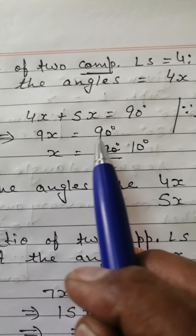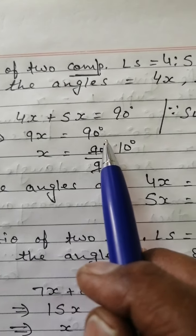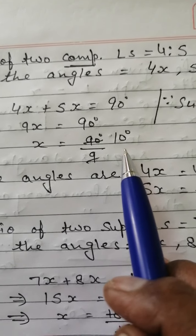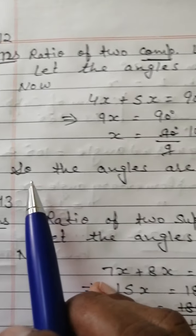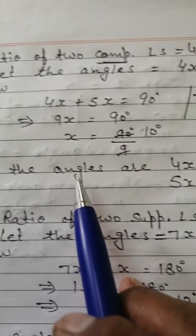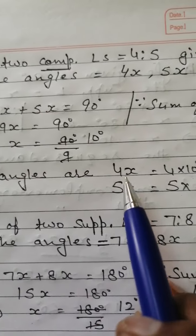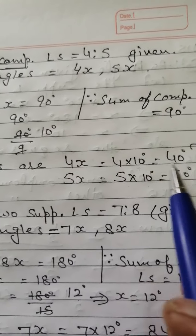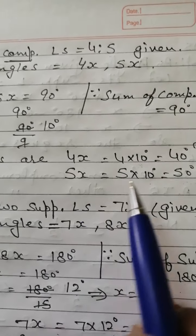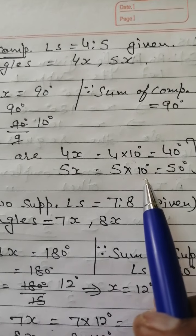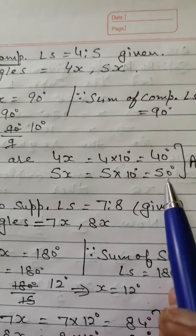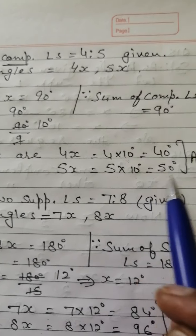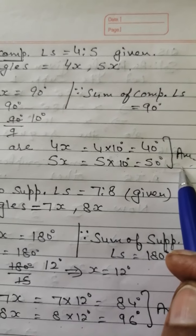Adding: 9x equals 90 degrees, so x equals 10 degrees. The angles are: 4x equals 4 multiplied by 10 equals 40 degrees, and 5x equals 5 multiplied by 10 equals 50 degrees. These two are the complementary angles. Answer: 40 degrees and 50 degrees.